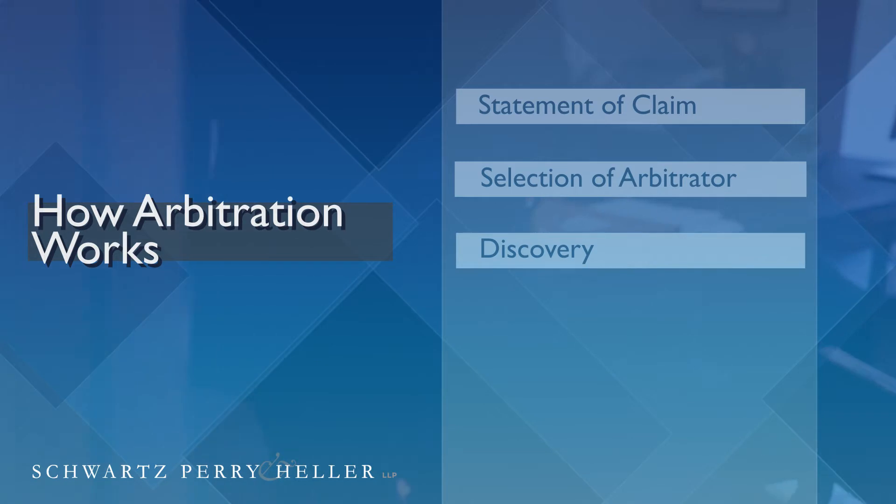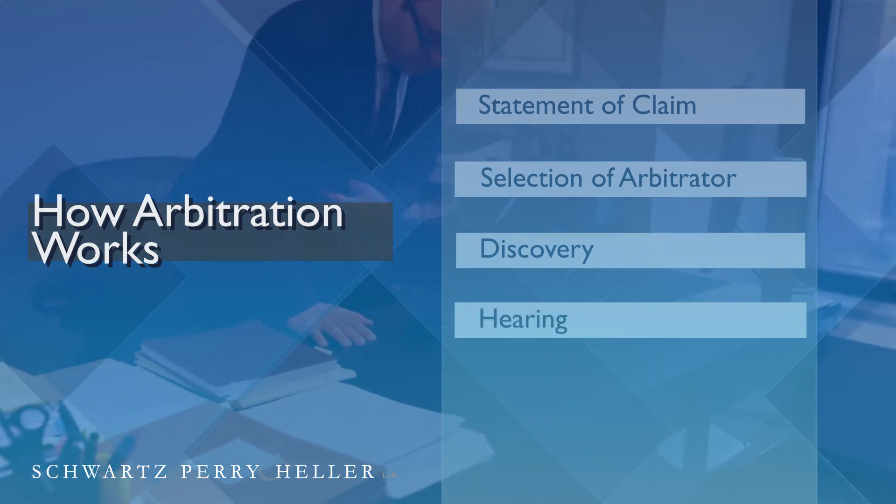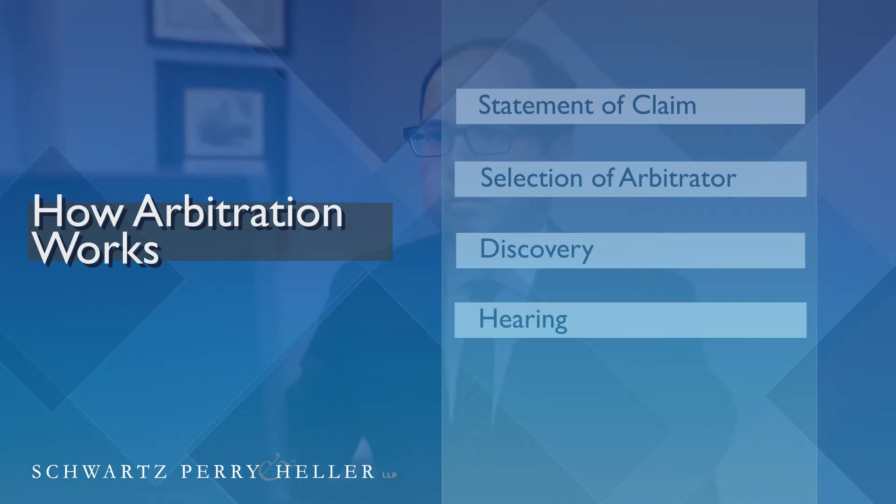The main event, so to speak, in an arbitration is the hearing itself. The arbitration is typically conducted in a conference room in an office building, unlike the big courtroom drama you might see on TV. This is a much more toned-down, closed-door process, where the parties are given a pre-described period of time to put on their case.